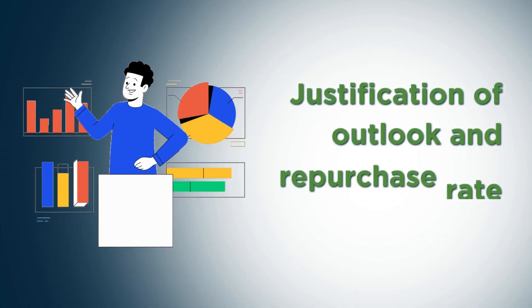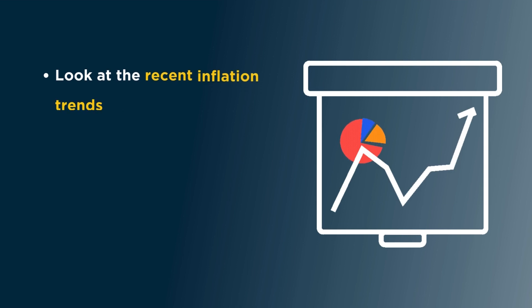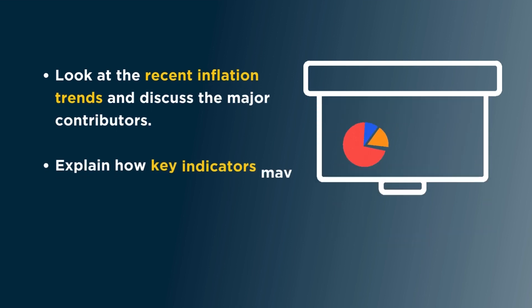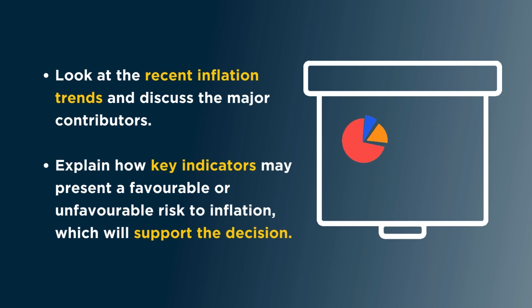Number three: Justification of Outlook and Repurchase Rate Decision. Look at recent inflation trends and discuss the major contributors. Explain how key indicators may present a favorable or unfavorable risk to inflation which will support your decision.